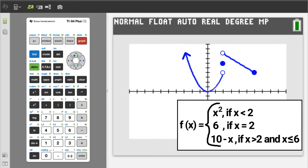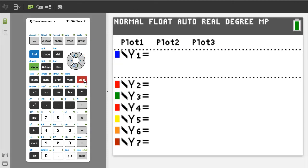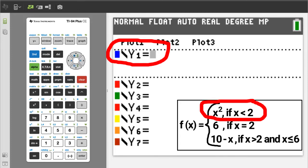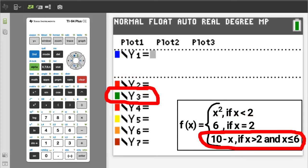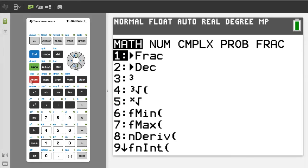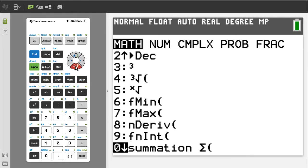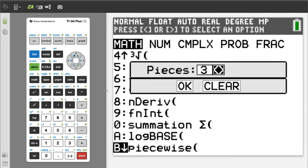Press the y equals button. Clear this equation by pressing the clear button. The second method is to enter each piece as a separate piecewise function. So we will enter this piece on y1, this piece on y2, and this piece on y3. But using the piecewise in the math button like we did before. So for the y1, press the math button. Go down to piecewise. Press the enter button. For the number of pieces, select only one. Use the left arrow button. We want one piece. Arrow down to ok and press enter.